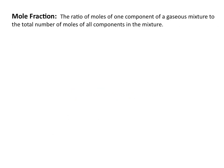The mole fraction is the ratio of moles of one component of a gaseous mixture to the total number of moles of all components in the mixture. So to find the mole fraction of one gas, we take the number of moles of that gas, N sub 1, and divide by the total number of moles of all the gases, N sub T, and that is equal to the mole fraction of that gas.